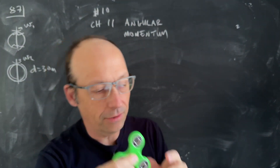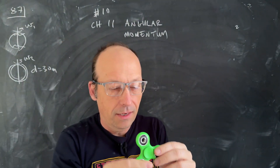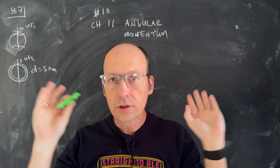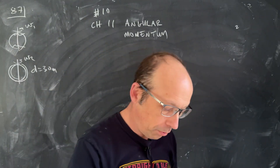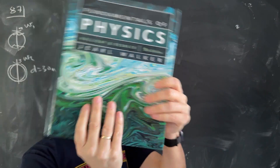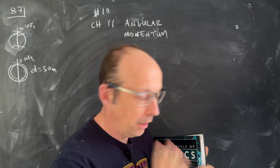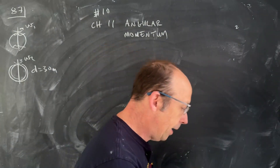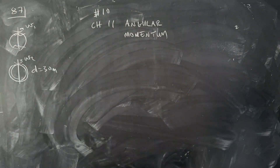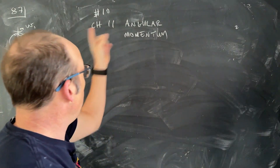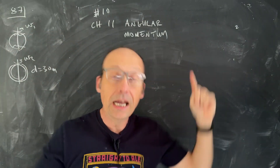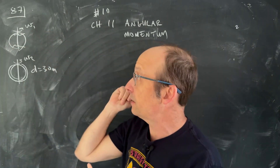This is a fidget spinner — a good example of angular momentum. We're solving 24 problems to teach physics, using a book for reference. I'm on problem number 11. I'll tell you the problem first, then talk about the physics, and then solve it.